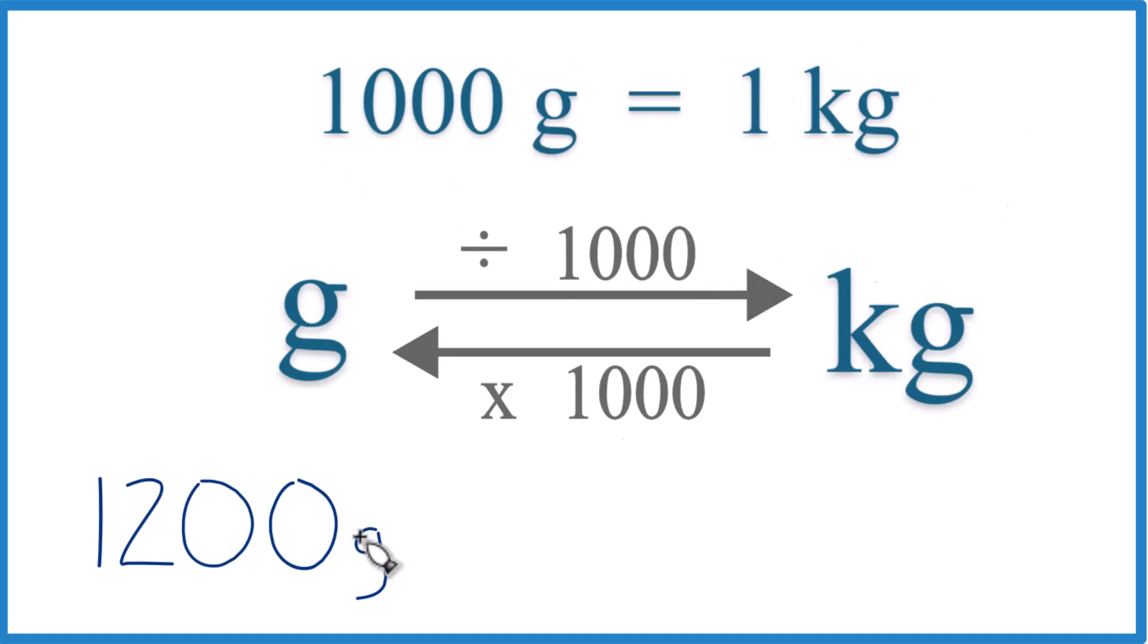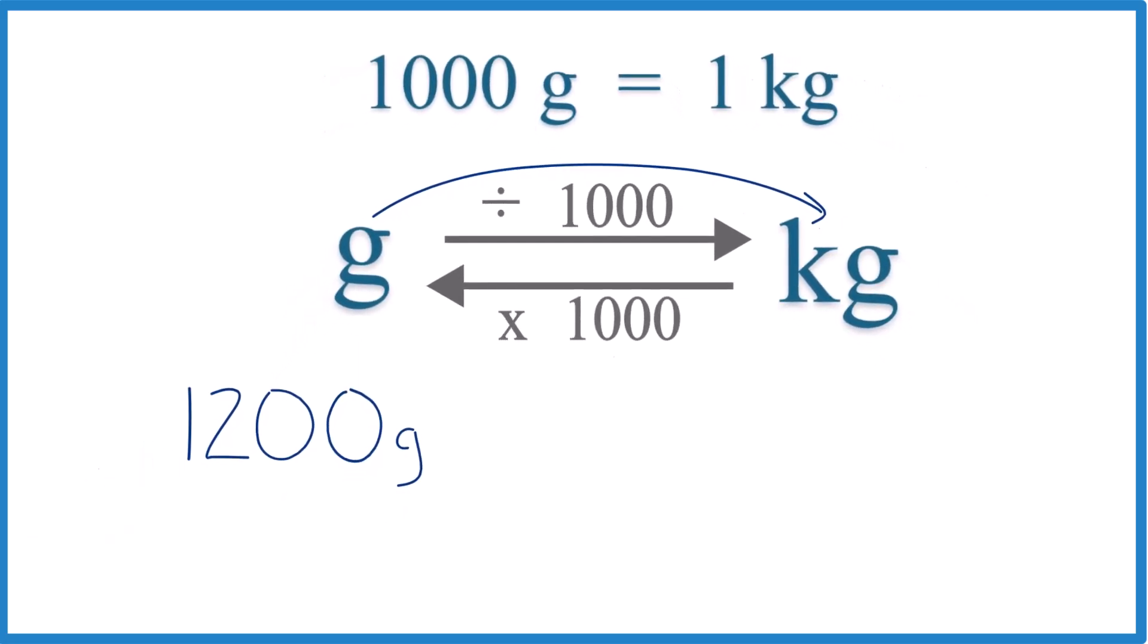So if we're going from grams to kilograms, grams to kilograms, we're going to divide by 1,000, like this. And that's 1,000 grams in 1 kilogram. 1,000 grams equals 1 kilogram.